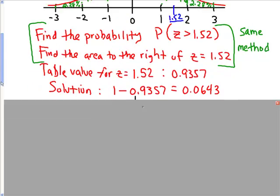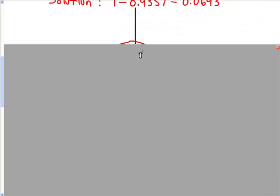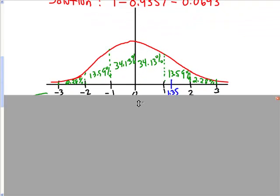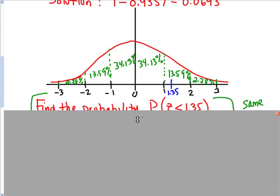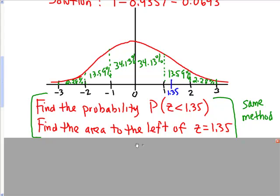Now let's look at another example. Let's look at finding the area to the left, and I want to find the area to the left of z equals 1.35, which is the same as finding the probability that z is less than 1.35.